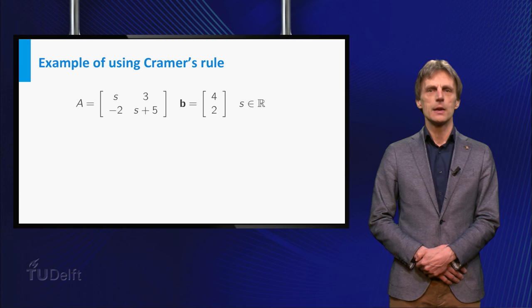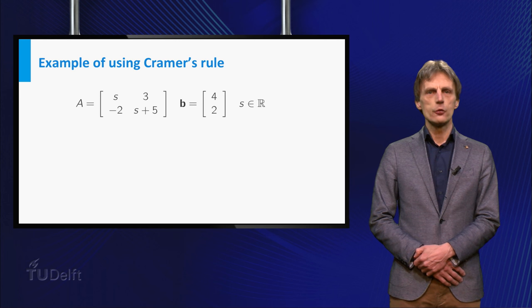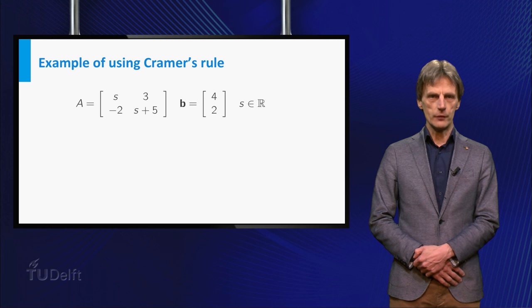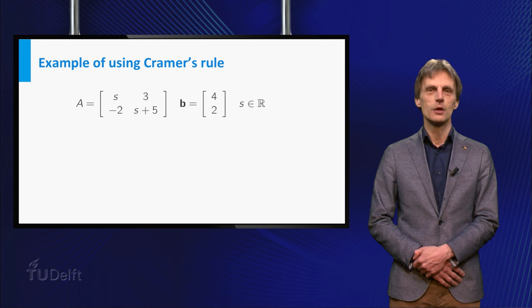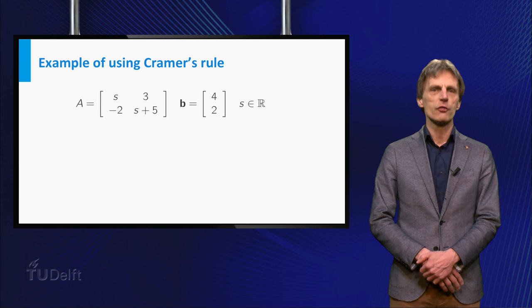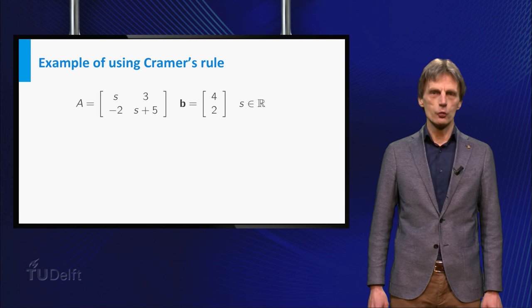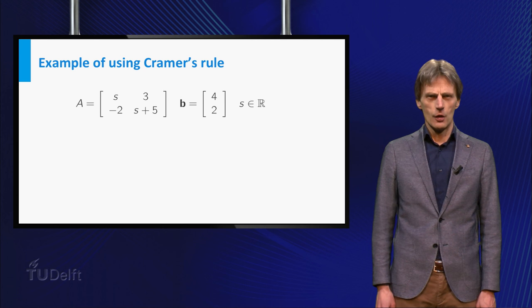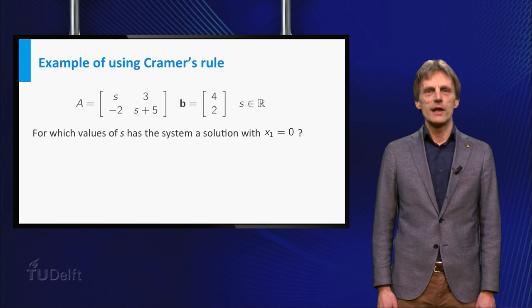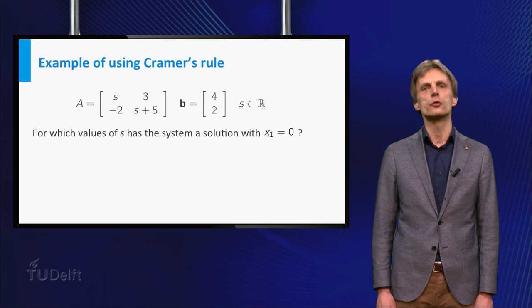Consider the system A times x is equal to b, where A is equal to the matrix [s 3; -2 s+5] with parameter s and b is equal to the vector [4; 2]. Suppose you need to know the answer to the following question: For which values of s does the system have a solution x with x1 equal to 0?